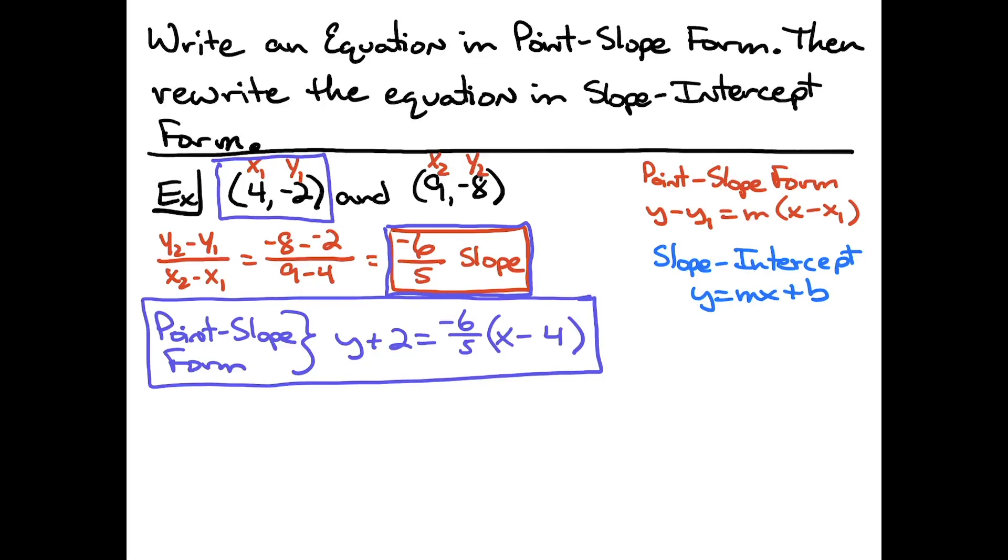Now we're going to take the equation. I'm going to rewrite it down here. I'm going to have y plus 2 is equal to negative 6 over 5 times the quantity x minus 4. Now the first thing I want to do in slope-intercept form, I'm just going to distribute that negative 6 fifths. So I'm going to distribute the negative 6 fifths to the x and to that minus 4. So then I'm going to have y plus 2 is equal to negative 6 fifths x. And then multiplying a negative 6 over 5 times a negative 4 is going to give me a positive 24 over 5.